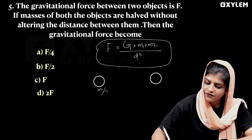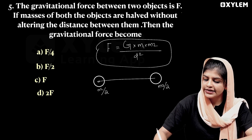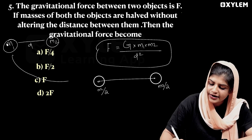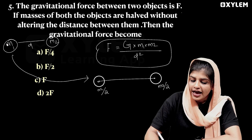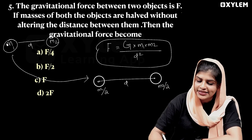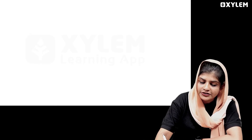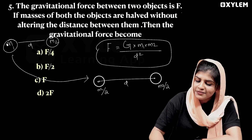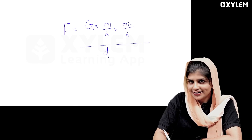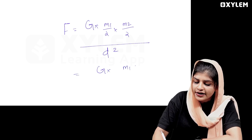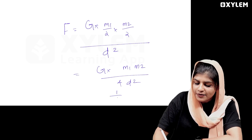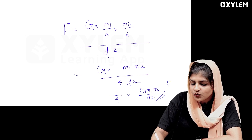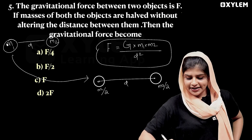We call it M1 and M2, now replaced by M1/2 and M2/2. So the new force F = G × (M1/2) × (M2/2) divided by D². That gives G × M1 × M2 divided by 4D², which is 1/4 × G × M1 × M2 divided by D². So we got 1/4 F, that is F/4.